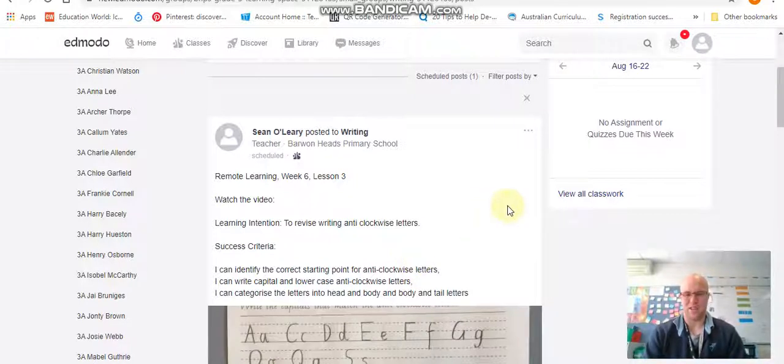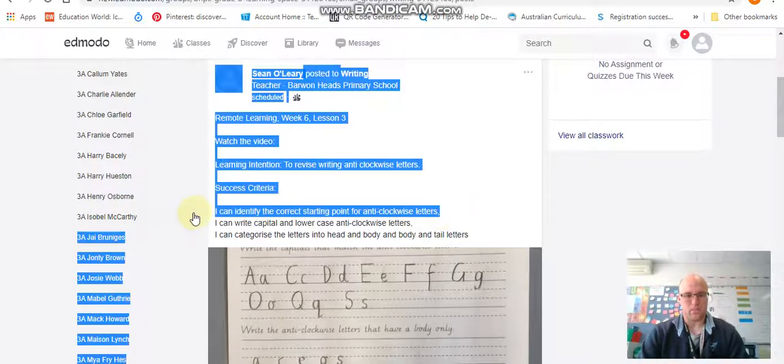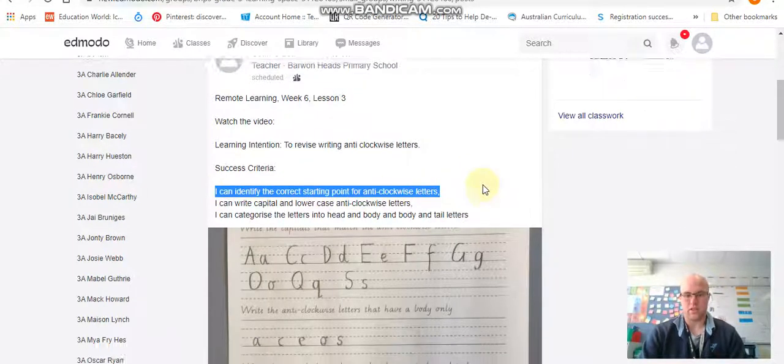I did have a few problems showing you on the video last week because the video shows it back to front from what I'm doing. So I'm not going to show it like I did last week. So there's three things that you need to do. You need to identify the correct starting point for the anti-clockwise letters. So we'll be doing that again.